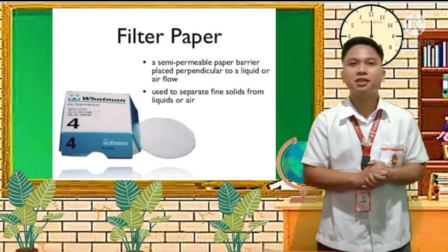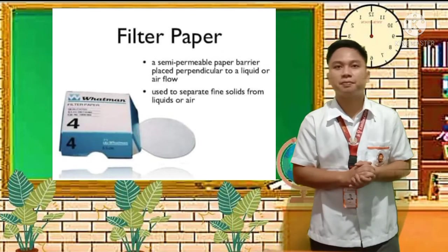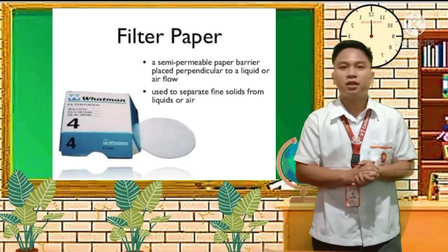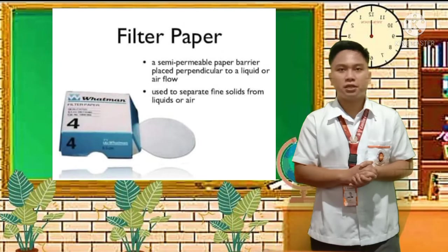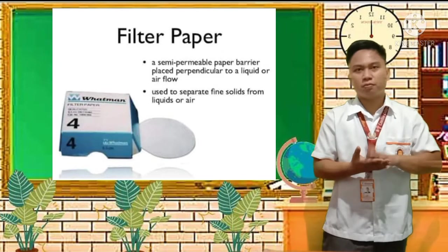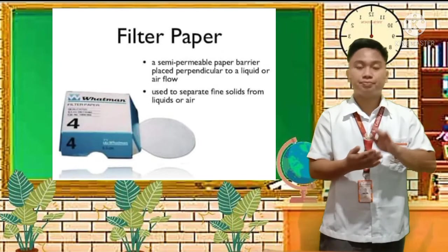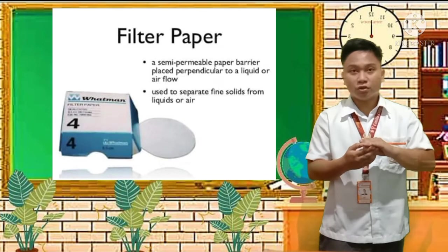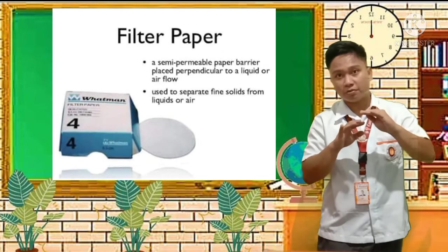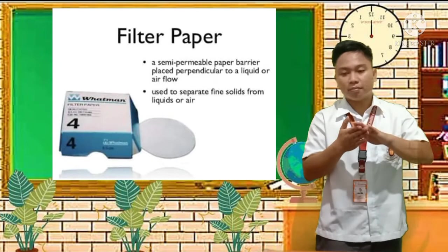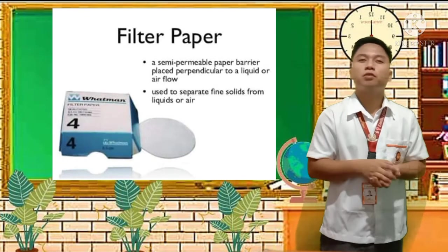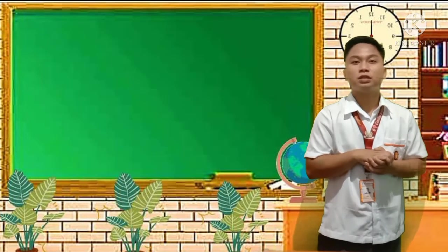Next we have filter paper. It is a semi-permeable paper barrier placed perpendicular to liquid or air flow, used to separate fine solids from liquids or air. You use it to absorb and filter the substance, leaving the solid behind — separating liquid from solid.